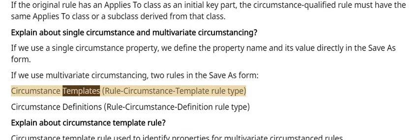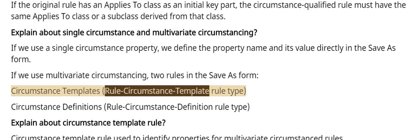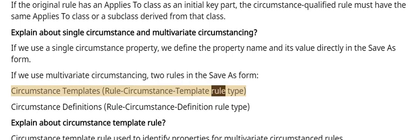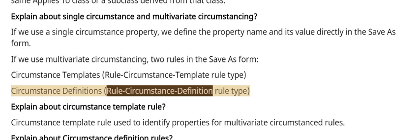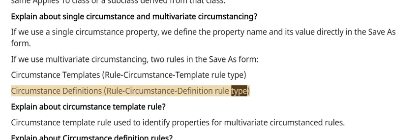The two rule types involved in multivariate circumstancing are: circumstance templates, which use the rule circumstance template rule type, and circumstance definitions, which use the rule circumstance definition rule type.